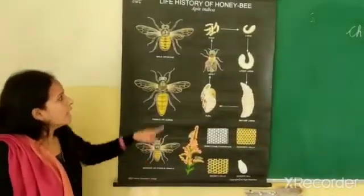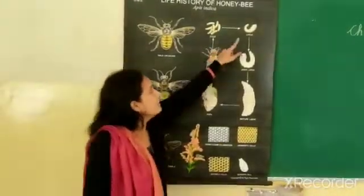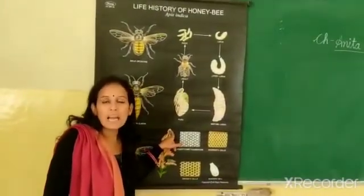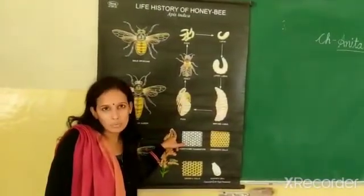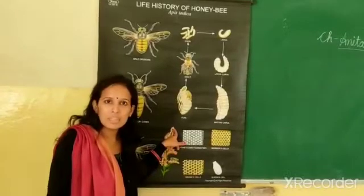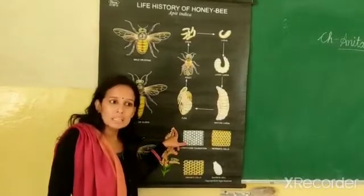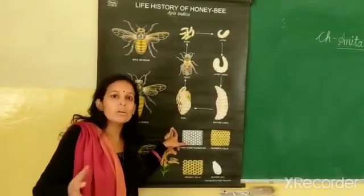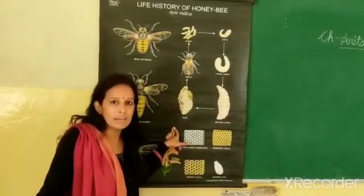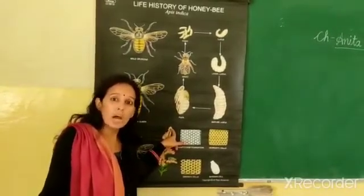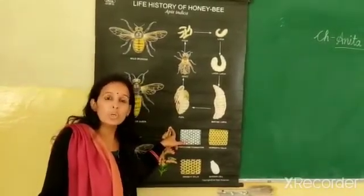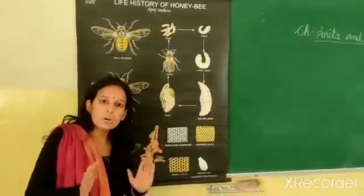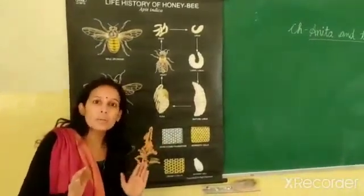We also covered the life cycle of the honey bee, which we call metamorphosis. Why does it have a different name? Just assume when you were a baby, you looked like your parents — you had two eyes, one nose, two hands. You were small in size but you looked like a human baby.